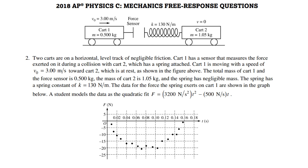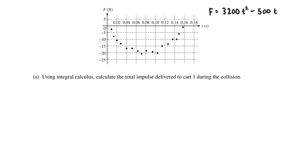The data for the force the spring exerts on cart 1 are shown in the graph below. A student models these data as a quadratic fit with the function F equals 3,200 times t squared minus 500 times t. In part A of this problem, we're supposed to use integral calculus to calculate the total impulse delivered to cart 1 during the collision.